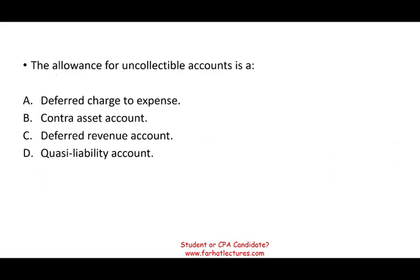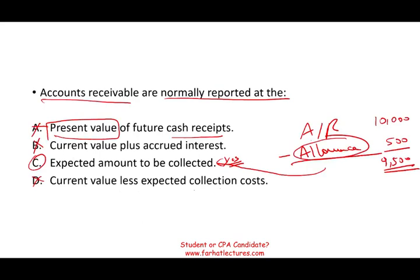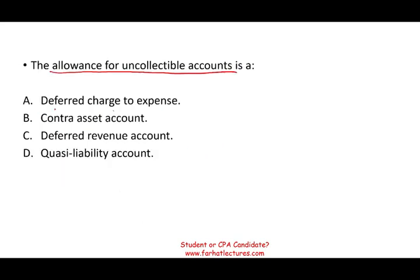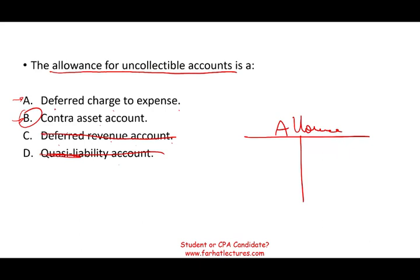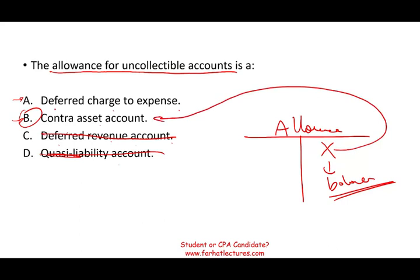The allowance for uncollectible accounts — what type of account is it? It's not a deferred charge to expense, not a deferred revenue account (which is unearned revenue), and not a quasi-liability. The allowance for doubtful accounts is a contra asset account, meaning its balance is a credit. On exam day, if the balance of the allowance is not given, assume it's a credit balance, because it is a contra asset.